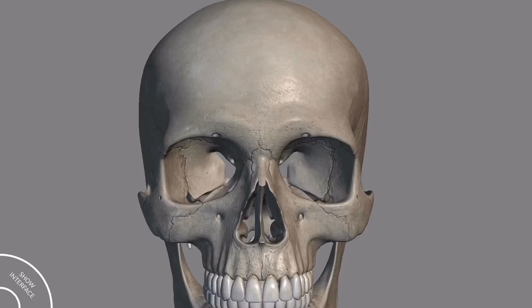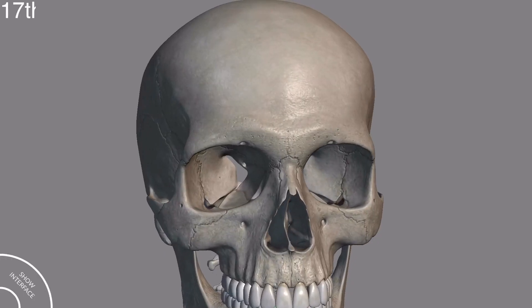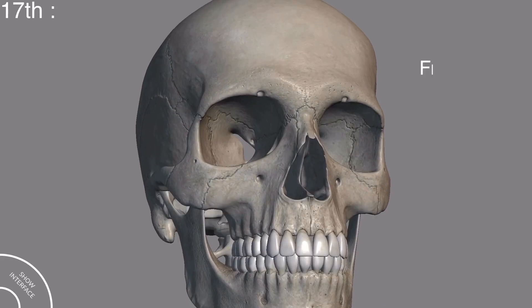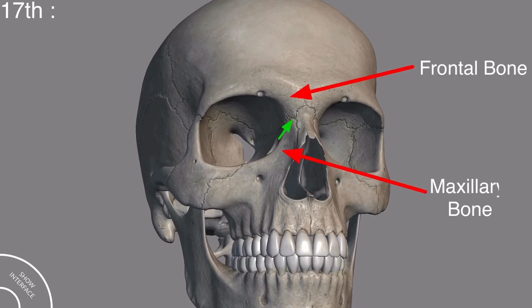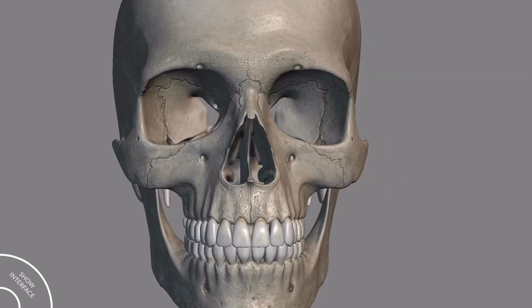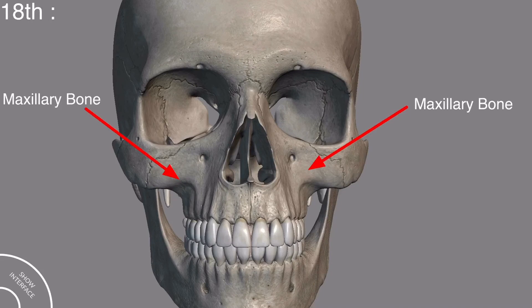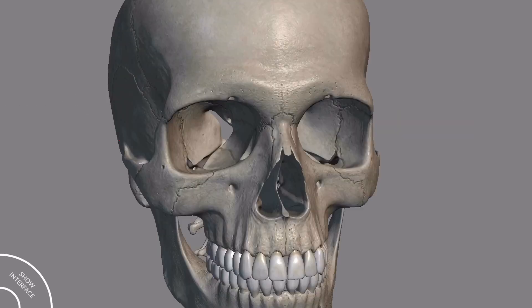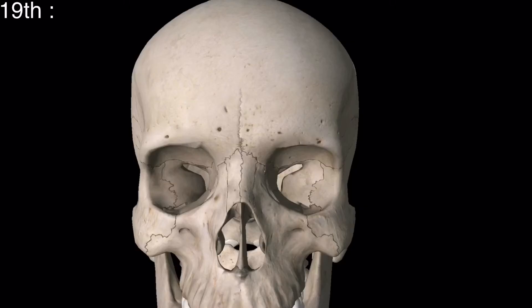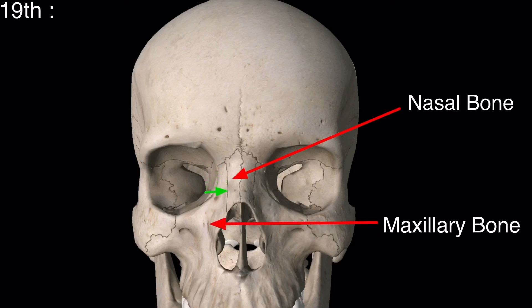Moving back to the main model, the suture present between the frontal bone and the maxillary bone is called the frontomaxillary suture. The two maxillary bones meet each other at the intermaxillary suture. The suture present between the nasal bone and the maxillary bone is called the nasomaxillary suture.